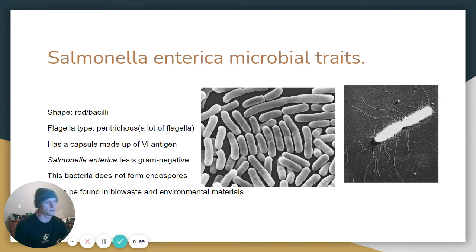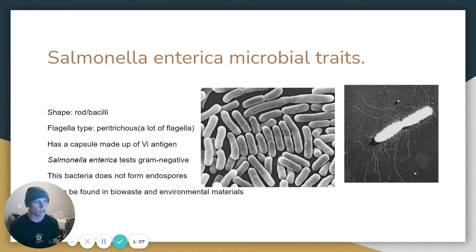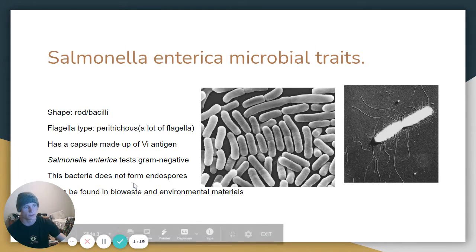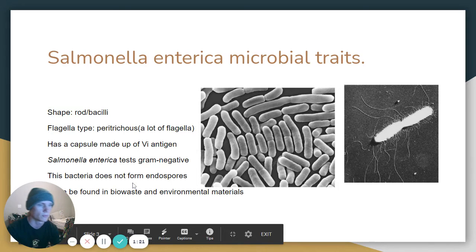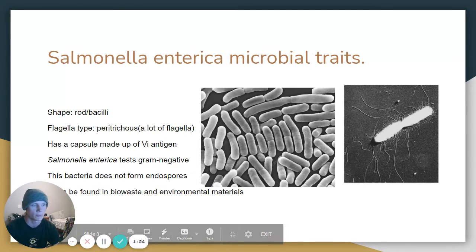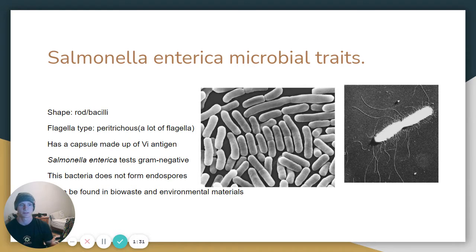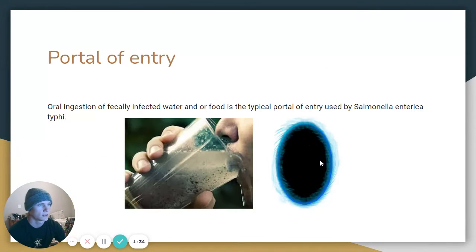Microbial traits: it has a rod shape called a bacilli. It has peritrichous flagellum, which means it has flagella all over its capsule. Its capsule is made up of Vi antigen, and it tests gram-negative. The bacteria does not form endospores either, and it can be found in bio-waste and environmental materials — the sewer system is a pretty good example.